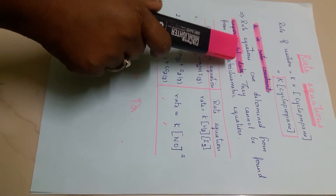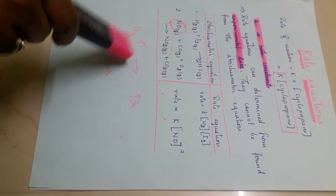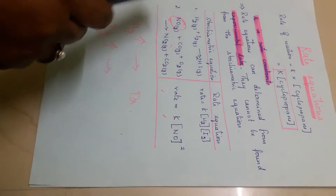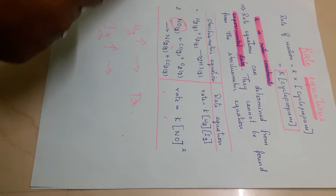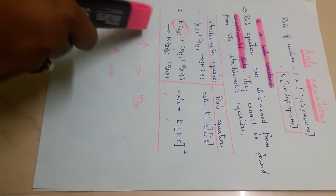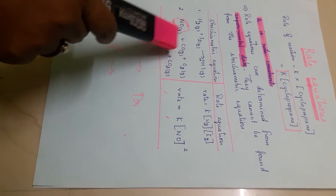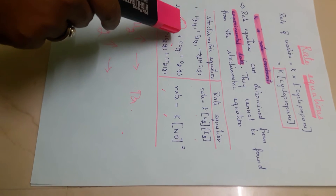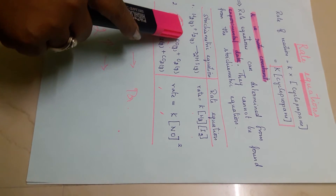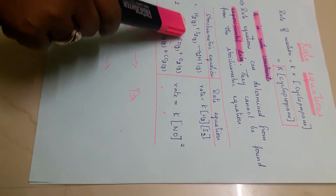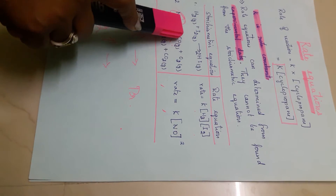But we can determine the rate equation by using experimental data. When you do the experiment, you can find out which species are involved in that reaction. The rate-determining step is the slowest step.